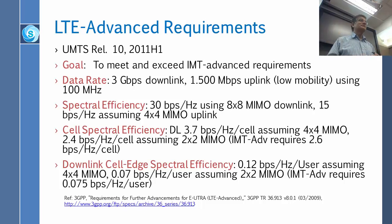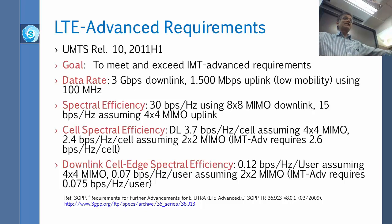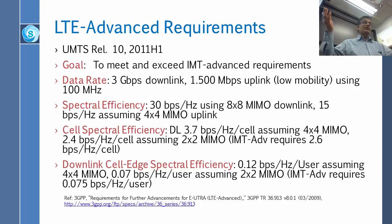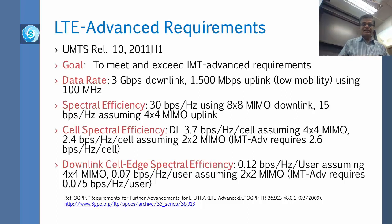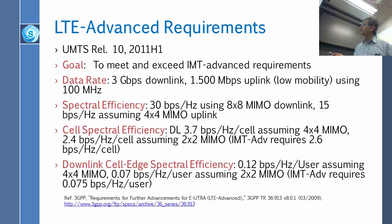These are extreme numbers — obviously we are not going to use 4×4 MIMO on the uplink, otherwise you would be carrying a truck with you, and 8×8 is also very costly — but it is possible. In practice, downlink spectral efficiency is 3.7 bits per hertz per cell assuming 4×4, or 2.4 bits assuming 2×2. They basically met the requirement.